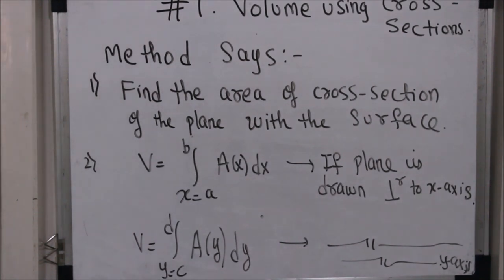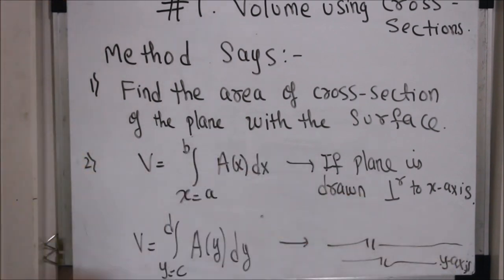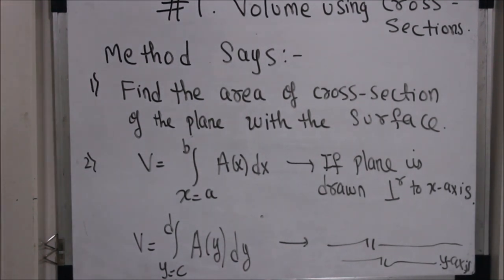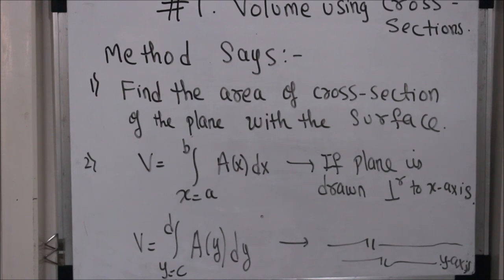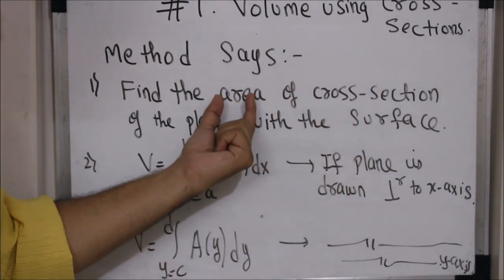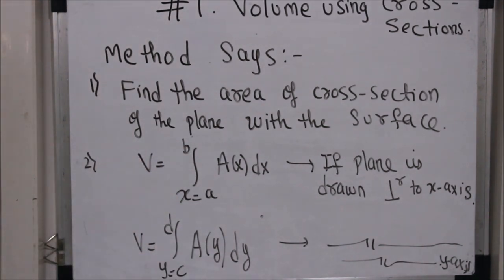As soon as you have some surface, you see what the cross section of that surface is with a plane — either perpendicular to the x-axis or perpendicular to the y-axis. Once you have the cross sections, you find the area of that cross section, and once you find the area you simply integrate. What you get is the volume — that's a very nice method.